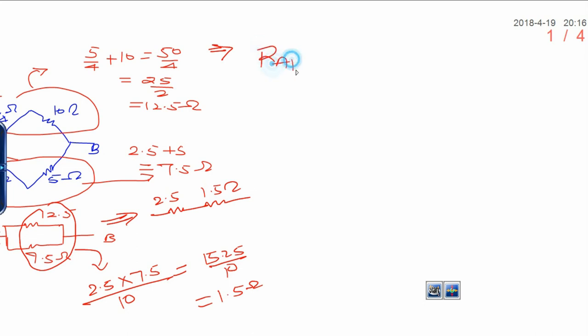Now final resistance between A and B can be written as 2.5 plus 1.5, that is 4 ohms. This is the way how you can easily solve the complex circuit.